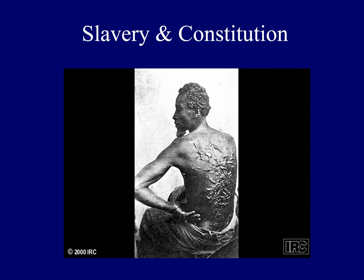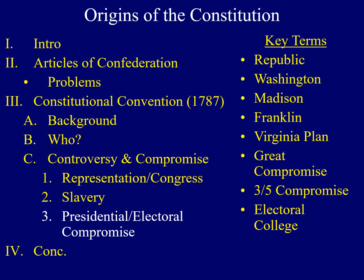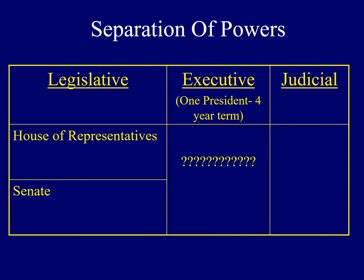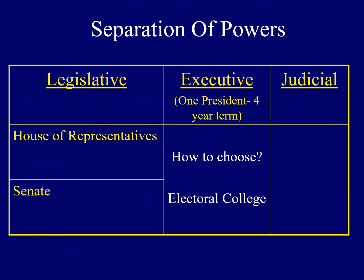The last controversy dealt with electing the President of the United States, and it resulted in the creation of the Electoral College. There were lots of questions: What should they call this person? How long should the term be? How many should there be — should there be two or three presidents, or just one? Eventually they decided to choose only one president, elected for one four-year term. Some argued the American people should directly elect the president; others said it should be members of the House or Senate. Eventually they chose something unique and created the Electoral College.